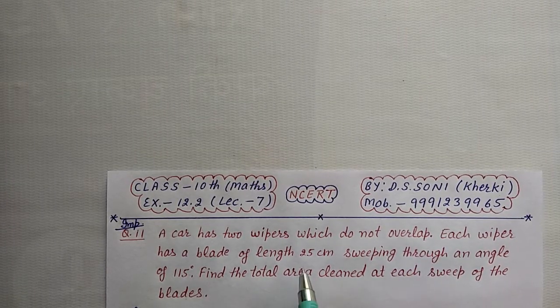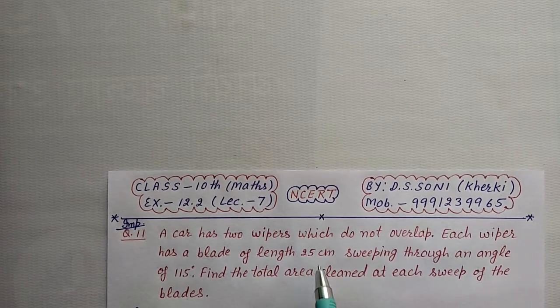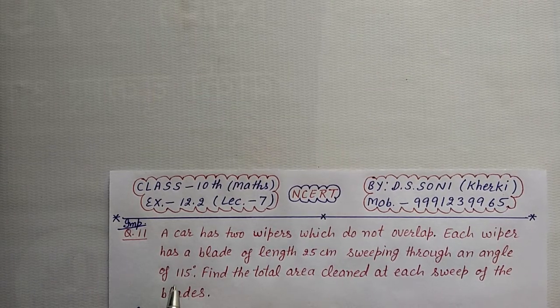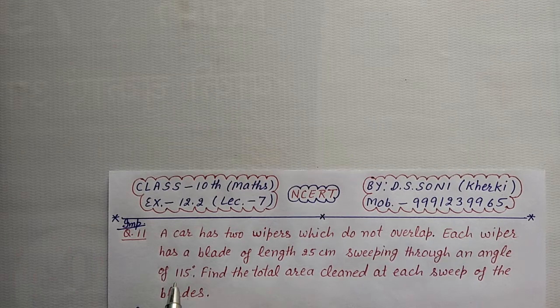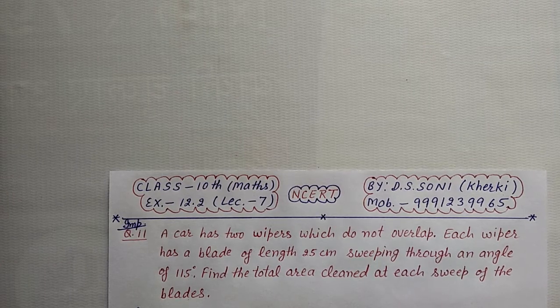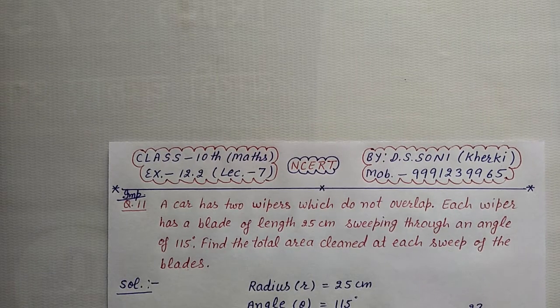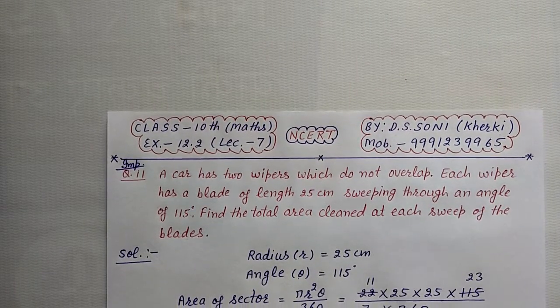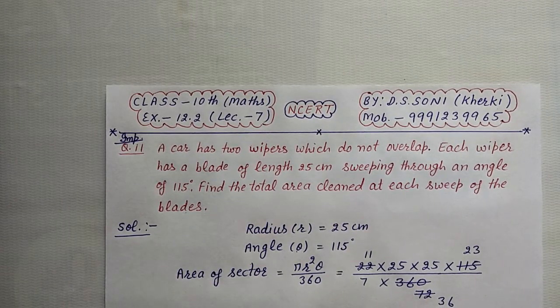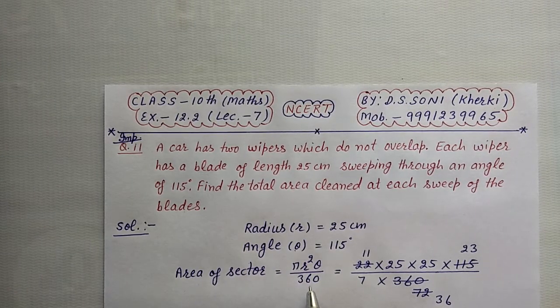The blade length is 25 cm, and the angle is 115 degrees. The radius is 25 cm, angle is 115 degrees. To find the total area, the area of sector formula is pi r squared theta upon 360.